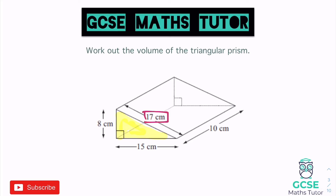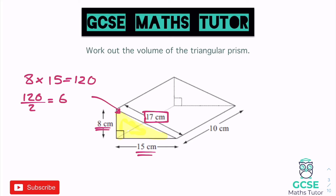For the triangle we've been given a length we don't actually need — the hypotenuse. To work out the area we don't need that slanted length; we want the perpendicular height to the base. Taking 15 as the base and 8 as the height, we can use those two lengths and ignore the 17. So the area is 8 times 15 which is 120, then halved: 120 divided by 2 gives us an area of 60. Multiplying by the depth of 10 centimetres gives a volume of 600 centimetres cubed.